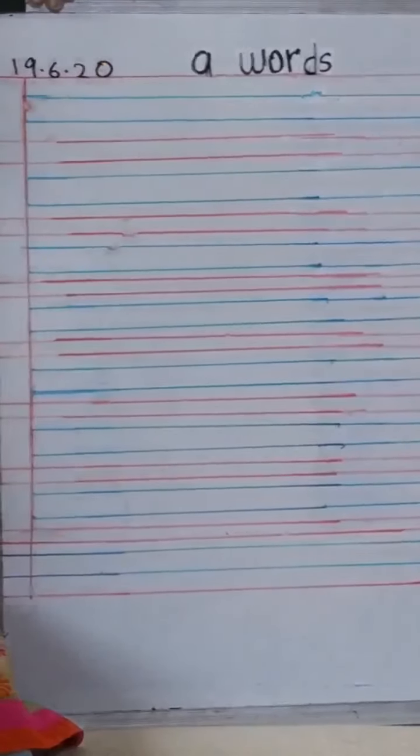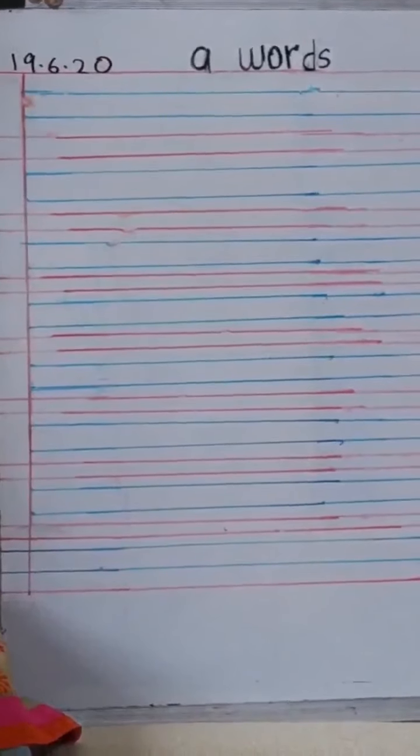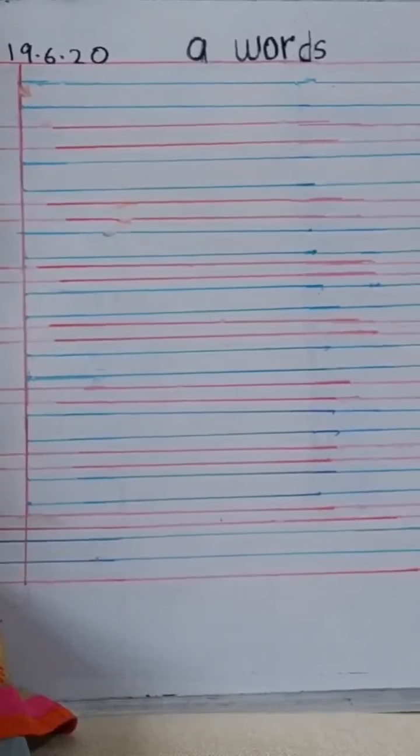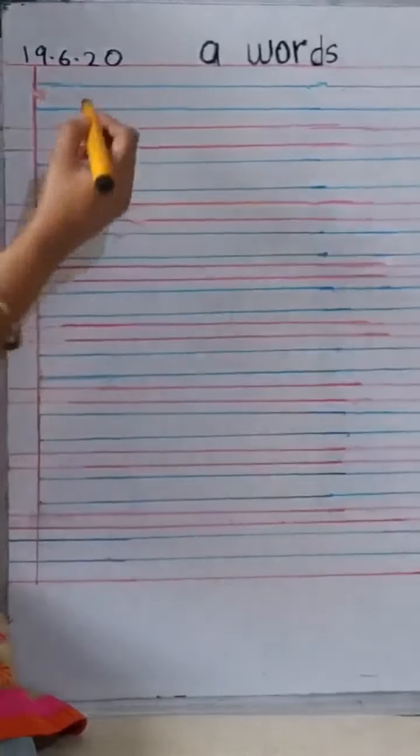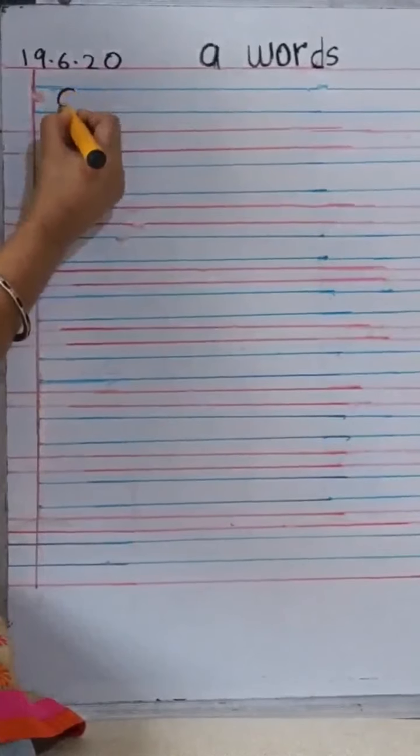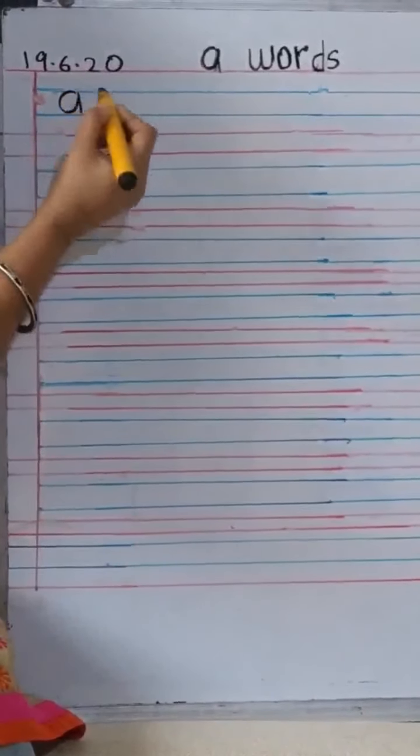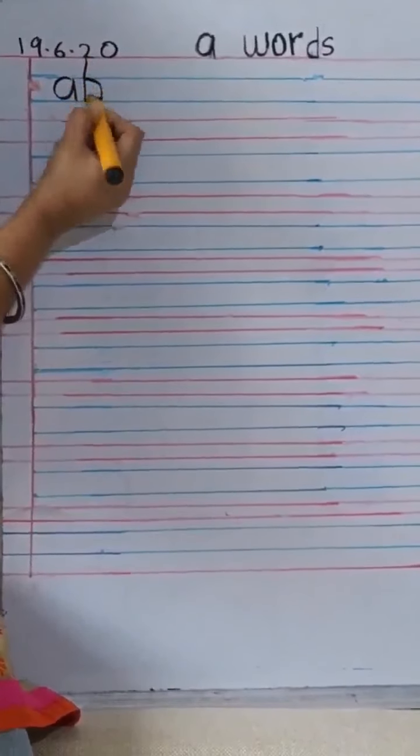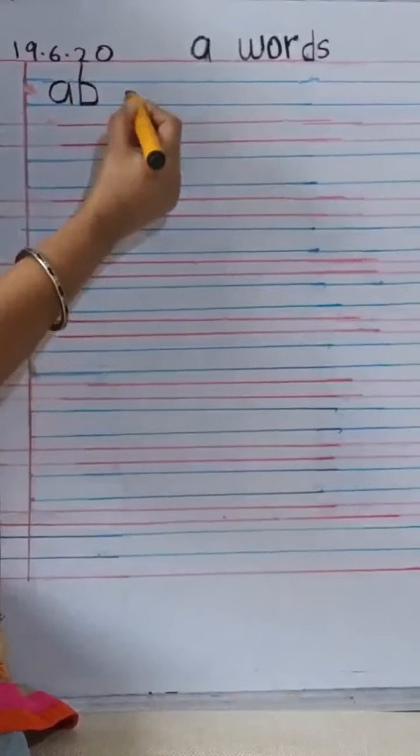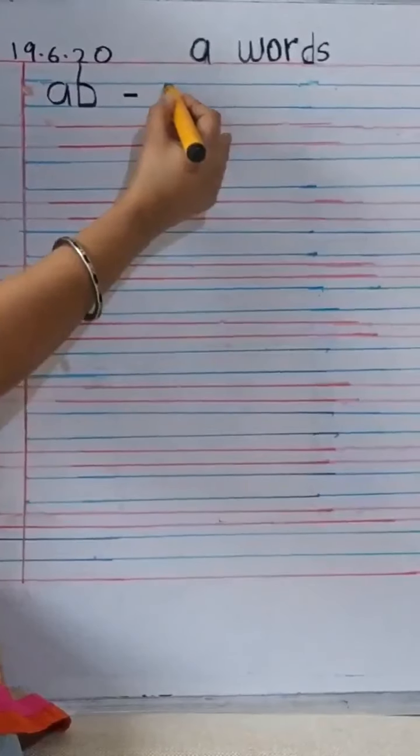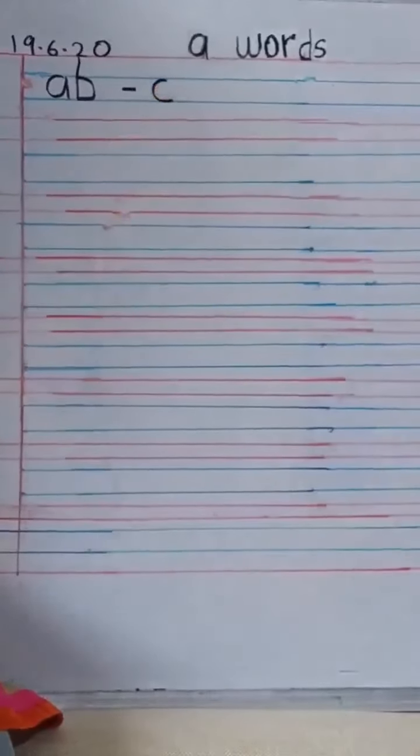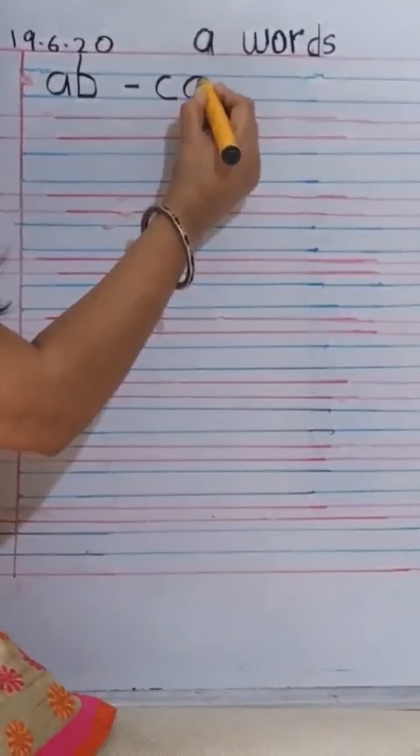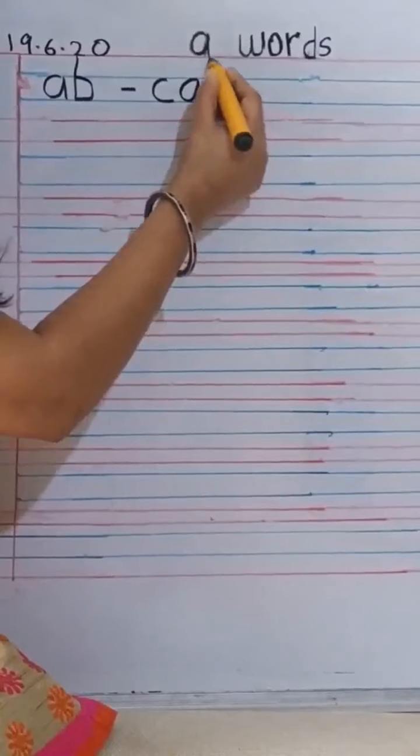Now we will first start with the first A family word. That is A, B, AB. So what we are going to write? A, B, AB. So we make an A. Next to A we make a B. A, B. Give a small dash and write A, C, A and a B.